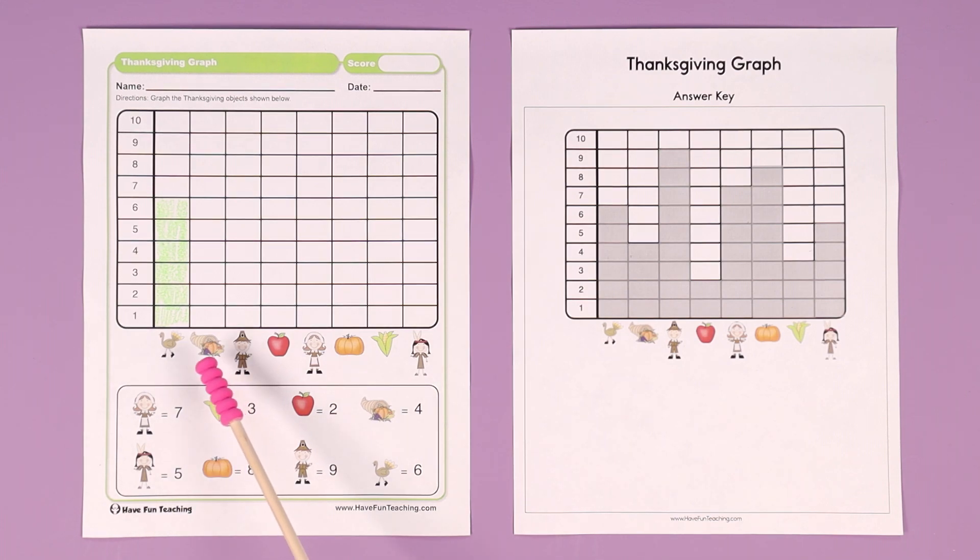And then you move on to the next one. How many of these are there? There are four. So you fill in the graph up to four.